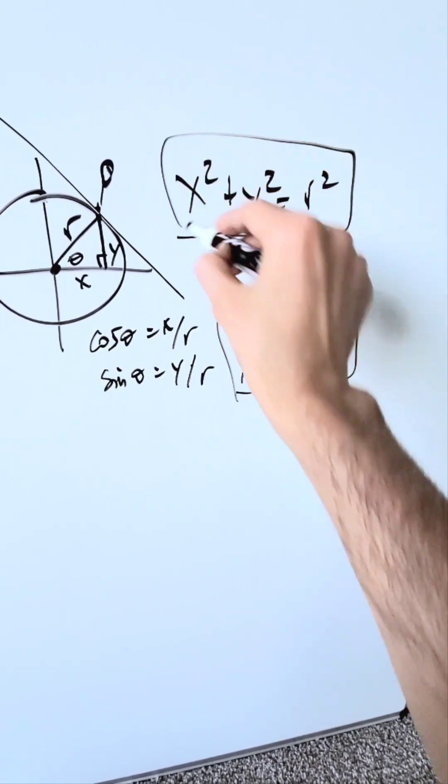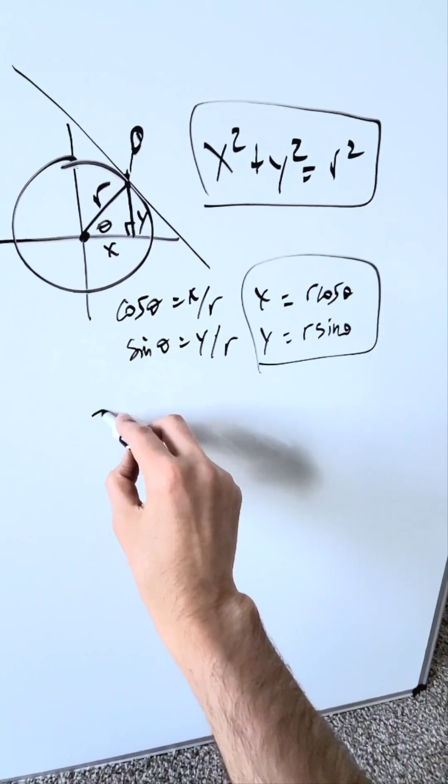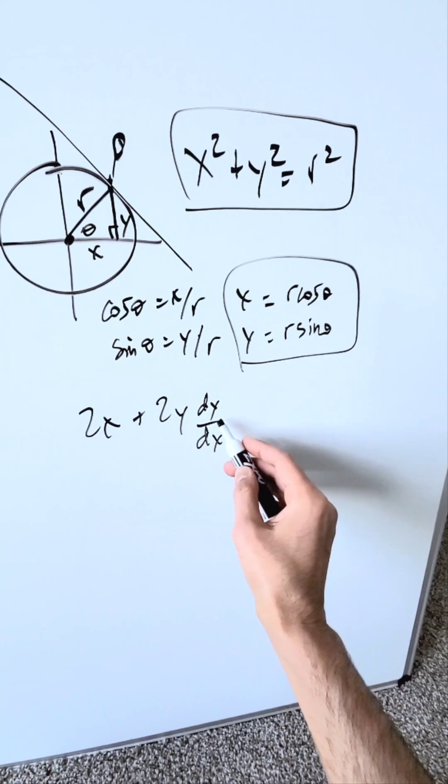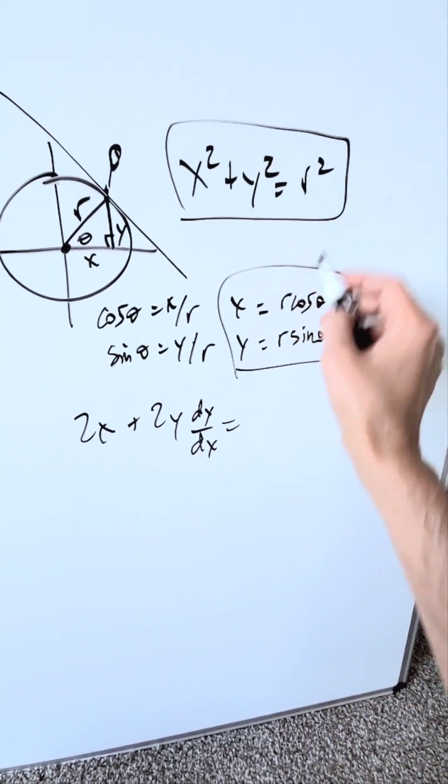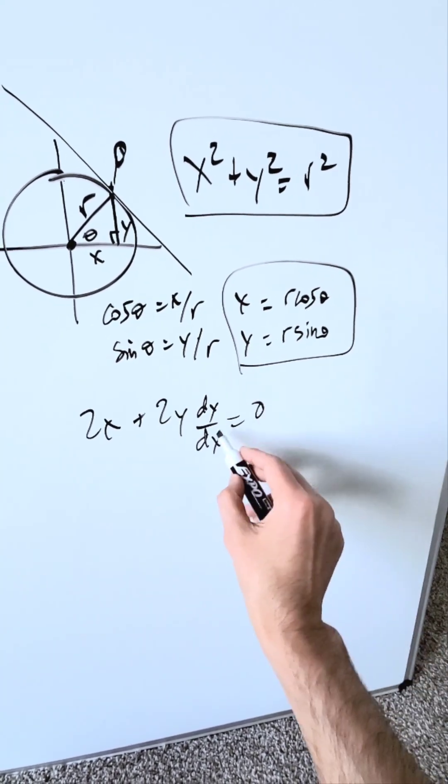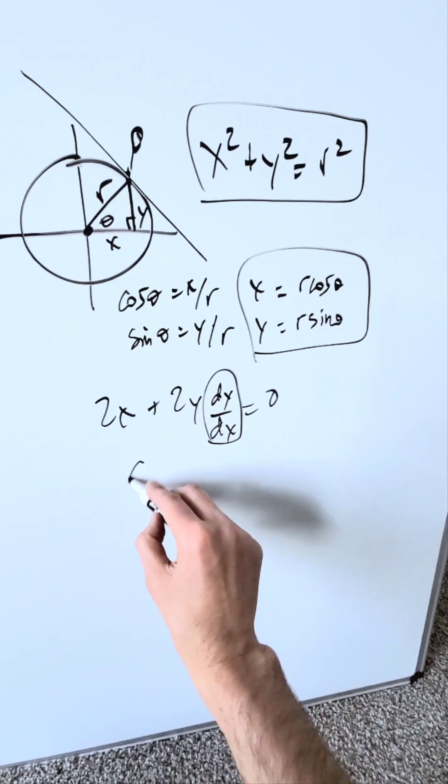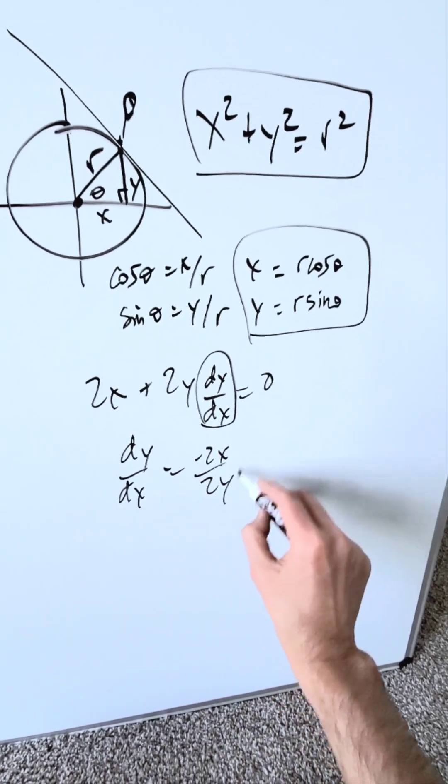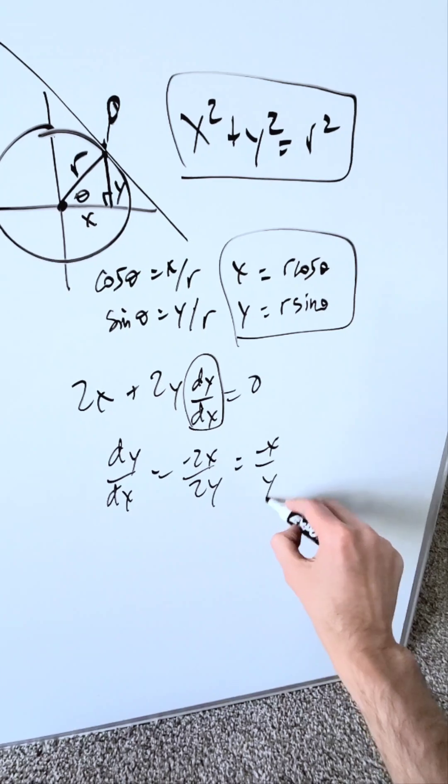Look right over here. Let's do the derivative of this. Derivative of x squared is 2x. The derivative of y squared is 2y, but you have to bring the derivative factor, which you will solve for dy/dx. Derivative of radius squared, which is a constant, is 0. You're solving for this. Push everything on the other side. dy/dx is equal to minus 2x over 2y, which is equal to minus x over y.